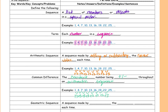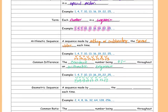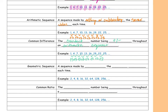We're just going over vocabulary, so if you need to take a picture of this before I scroll up, you should do that because I am going to scroll up right now. And a geometric sequence is made by multiplying the same value every time.